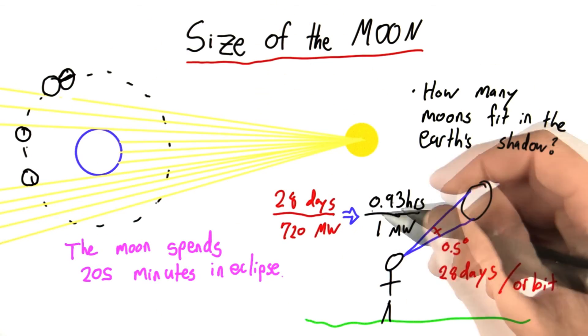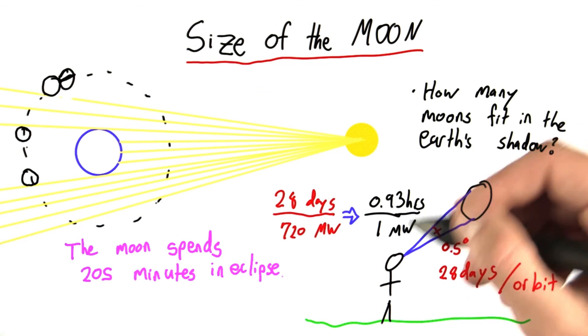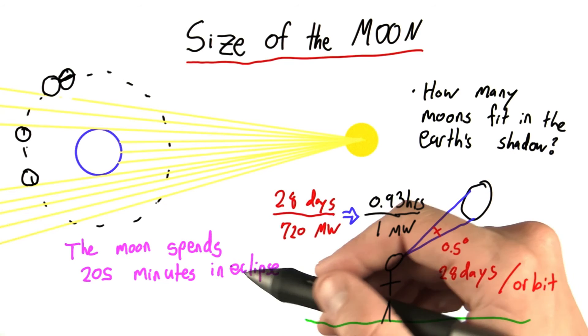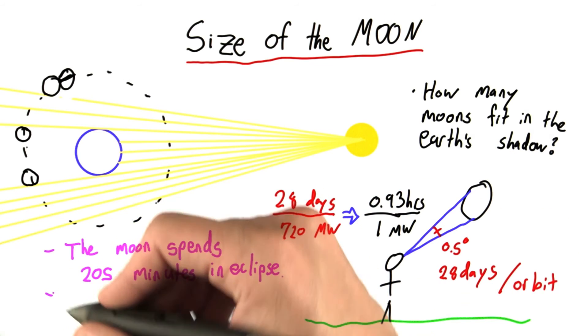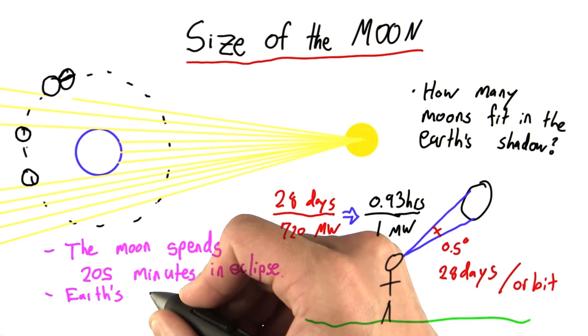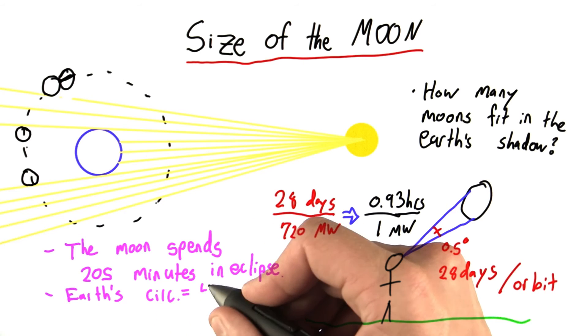Okay? So, we know the moon takes 0.93 hours to go one moon width, and we know it spends 205 minutes in eclipse, and we know Earth's circumference is equal to 40,000 kilometers.